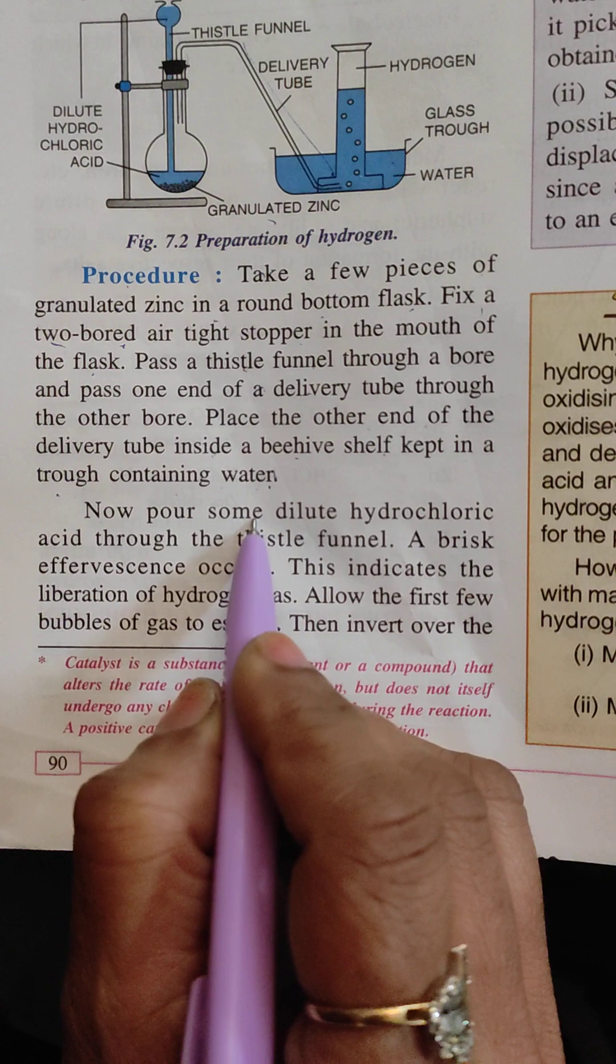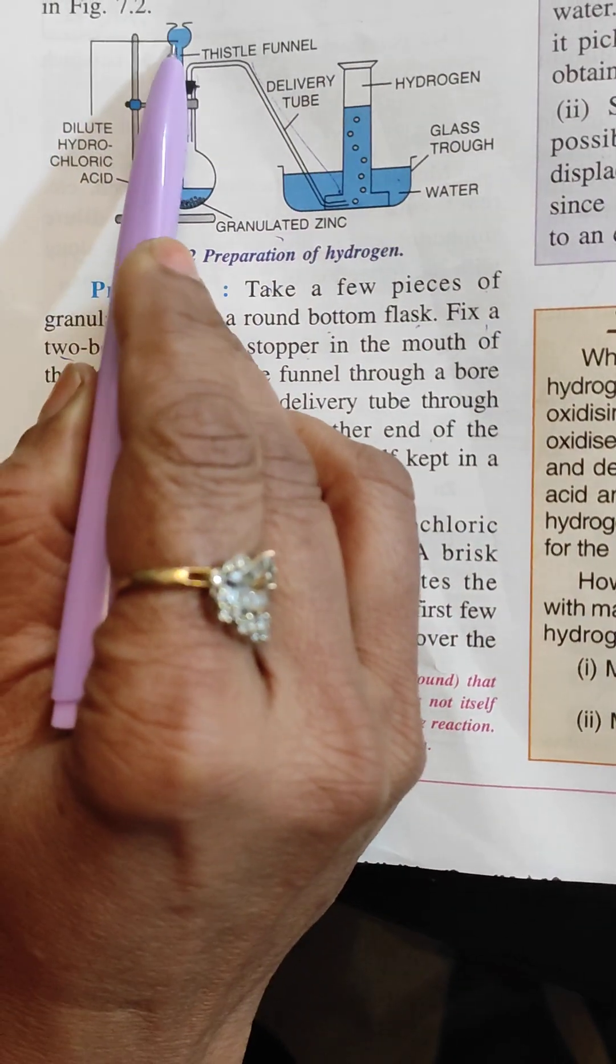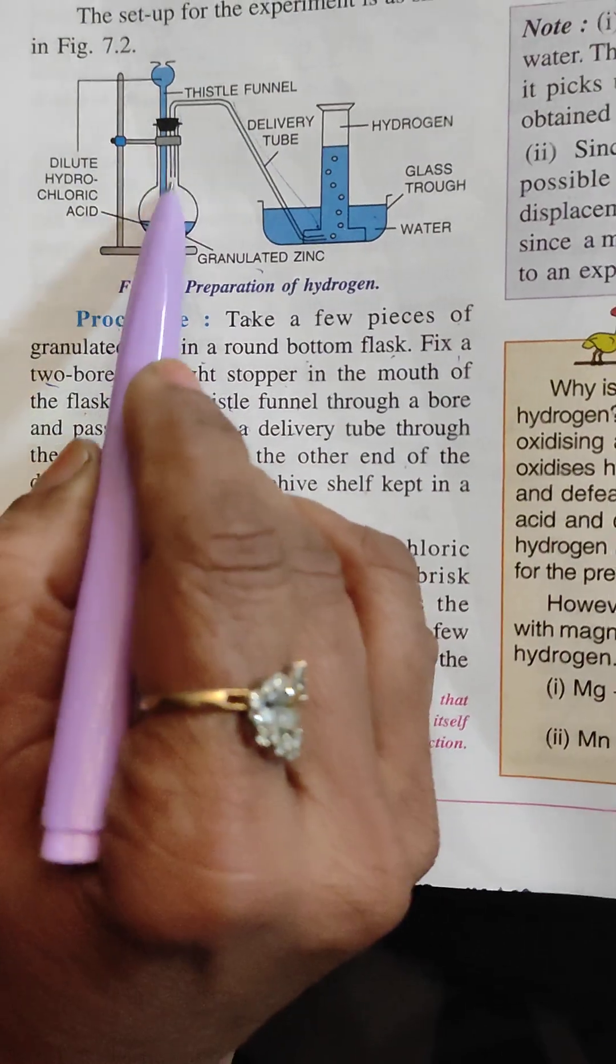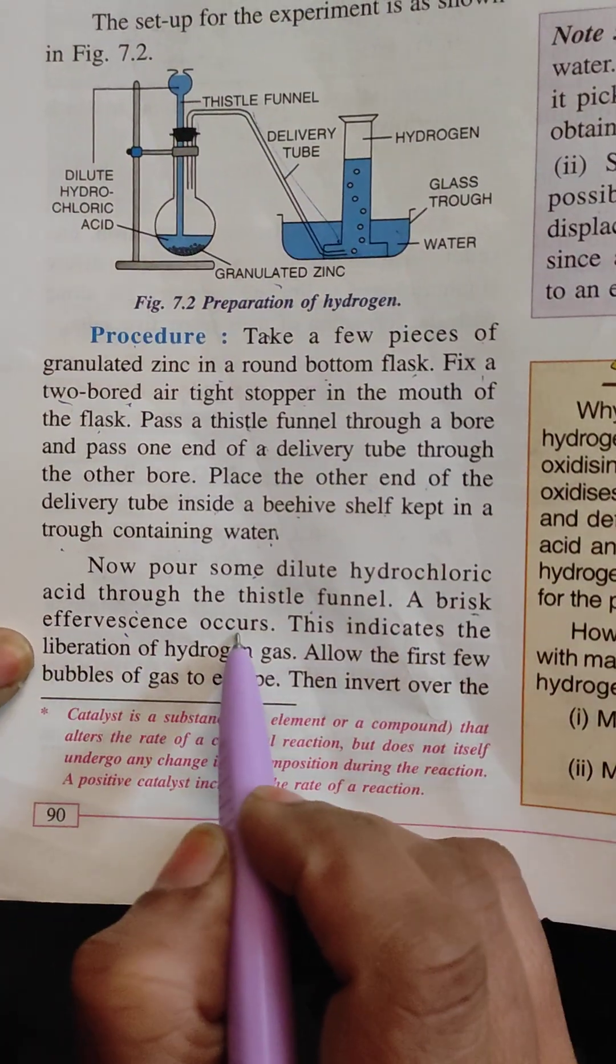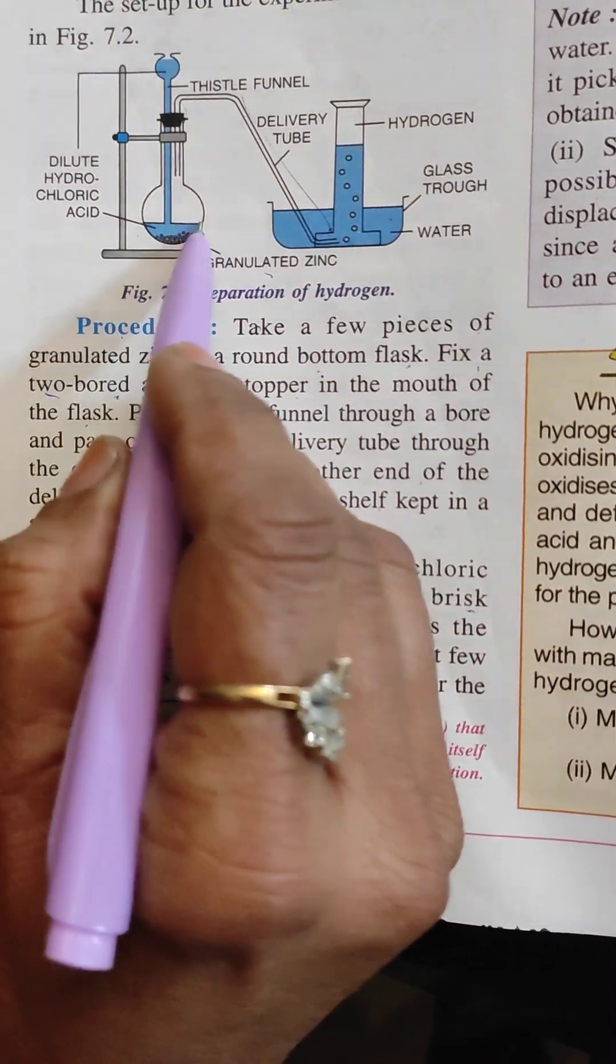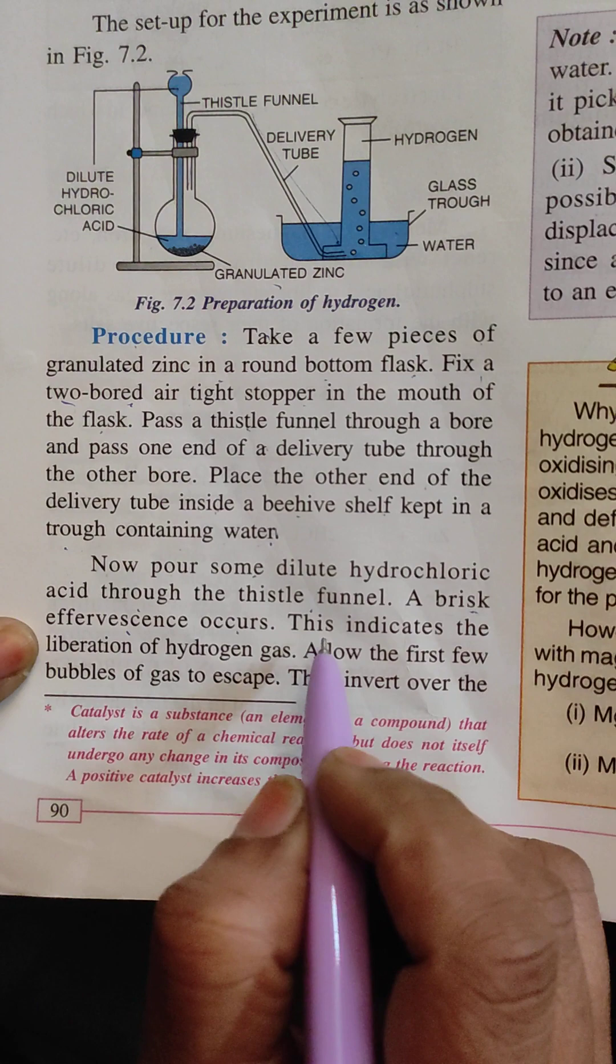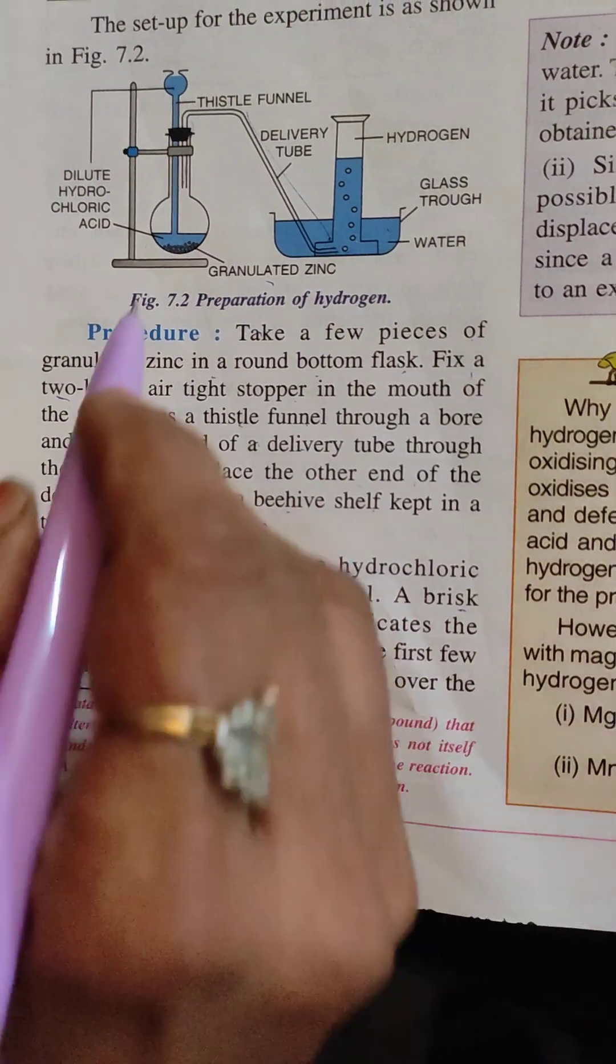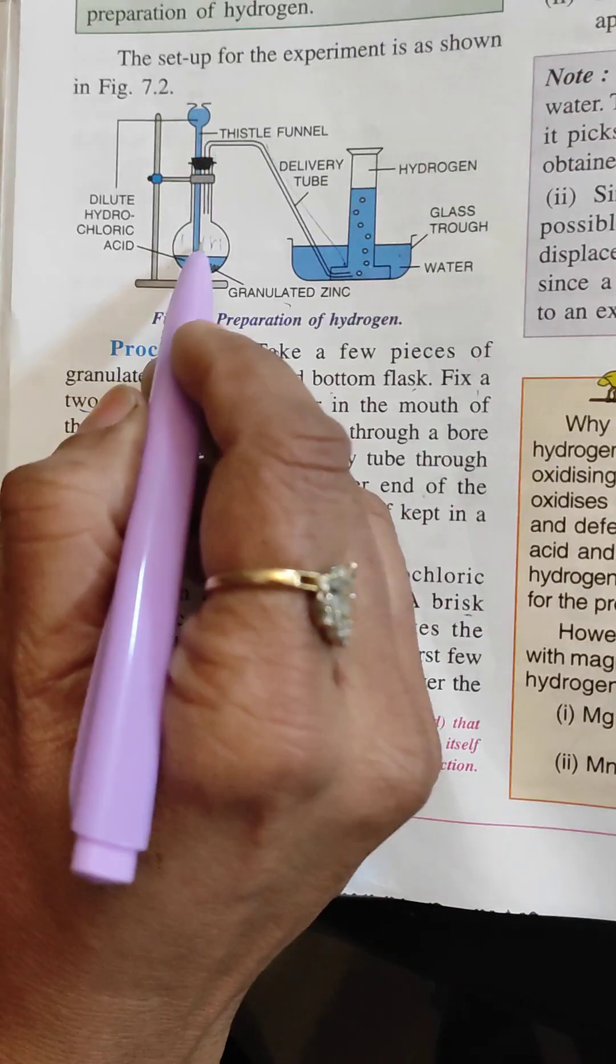First of all, now pour some dilute hydrochloric acid through the thistle funnel. This is the thistle funnel. What do we need to do with hydrochloric acid? And a brisk effervescence occurs. Effervescence here is brisk, it means that there will be a reaction and it will show us. So this indicates what happens here. That the liberation of hydrogen gas. Hydrogen gas is coming out.